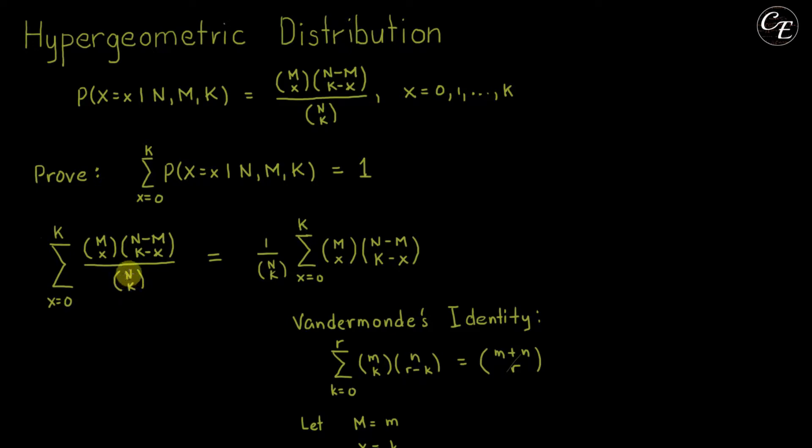Then n and k are constants because they are just the parameters on this probability mass function. So we can move this out from the summation like this, 1 over n choose k. And we're left with m choose x and n minus m choose k minus x.